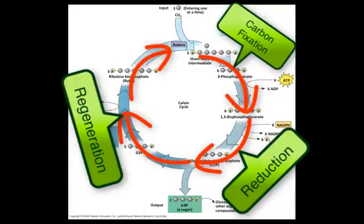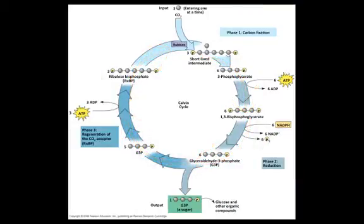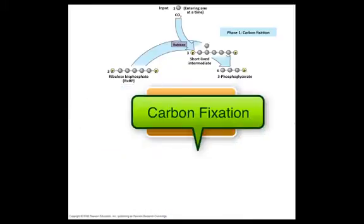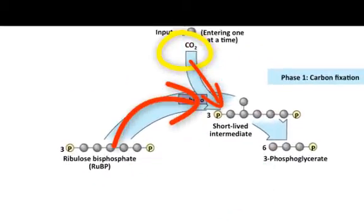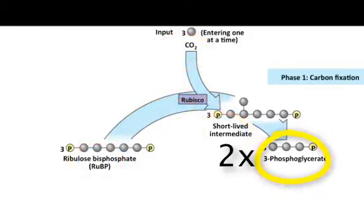This all takes place with the help of one enzyme called ribulose 1,5-bisphosphate carboxylase oxygenase — but we'll call it rubisco for short. First is the carbon fixation phase. Here we see CO2 is added to a 5-carbon compound called RuBP to make a 6-carbon intermediate molecule that quickly breaks down into two 3-carbon intermediate compounds.